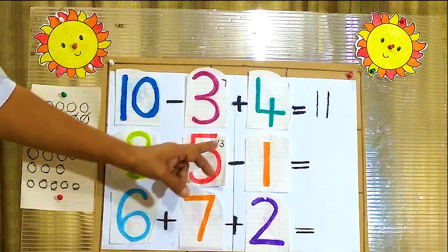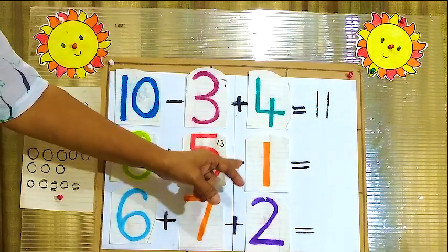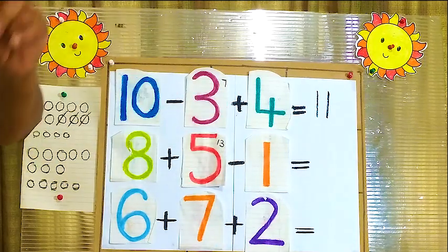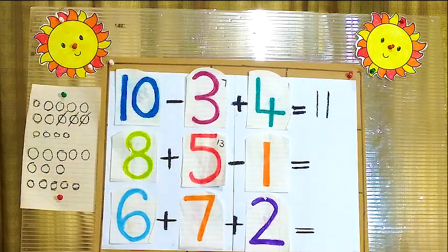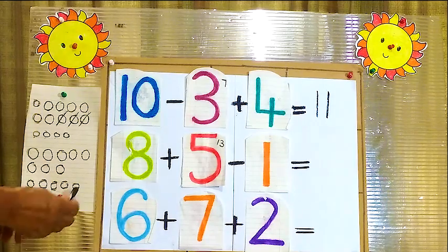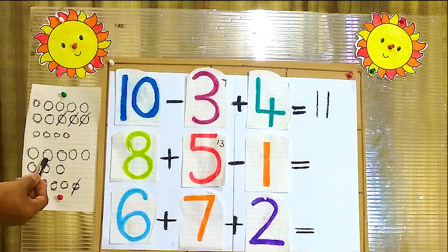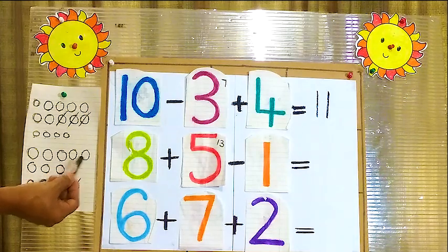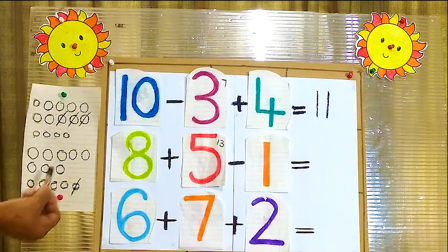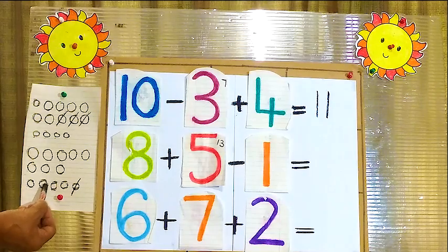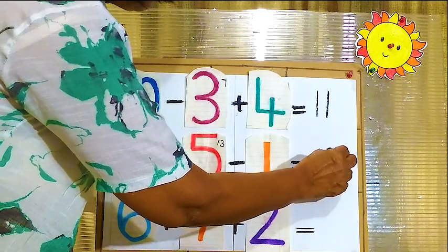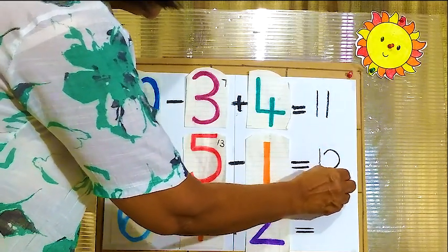Then from this 13 we have to take out 1. Now here 13 balls — we have to take out 1. I will cut 1. How many remaining balls here? 1, 2, 3, 4, 5, 6, 7, 8, 9, 10, 11, 12. The answer is 12.